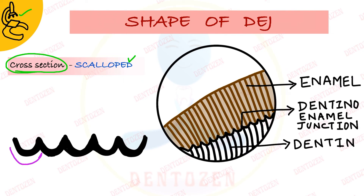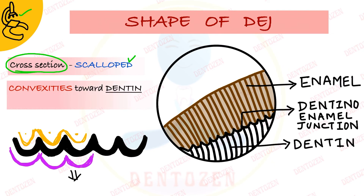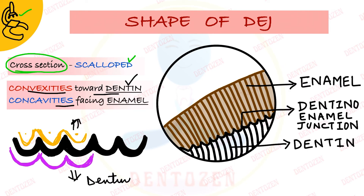There are two surfaces of this junction you need to know. On one surface, this junction has convexities — something protruding outward. On the opposite surface, this junction has concavities — something depressed inward. The convexities of this junction are towards dentine, and the concavities of this junction are facing towards enamel. This can be a viva question.